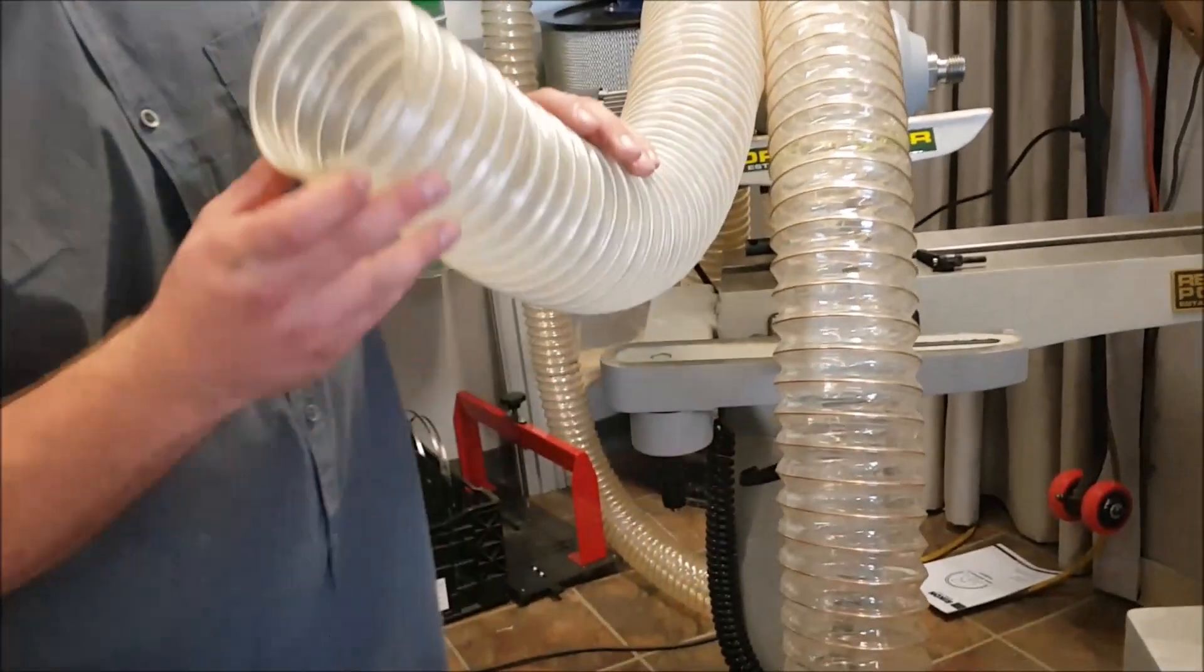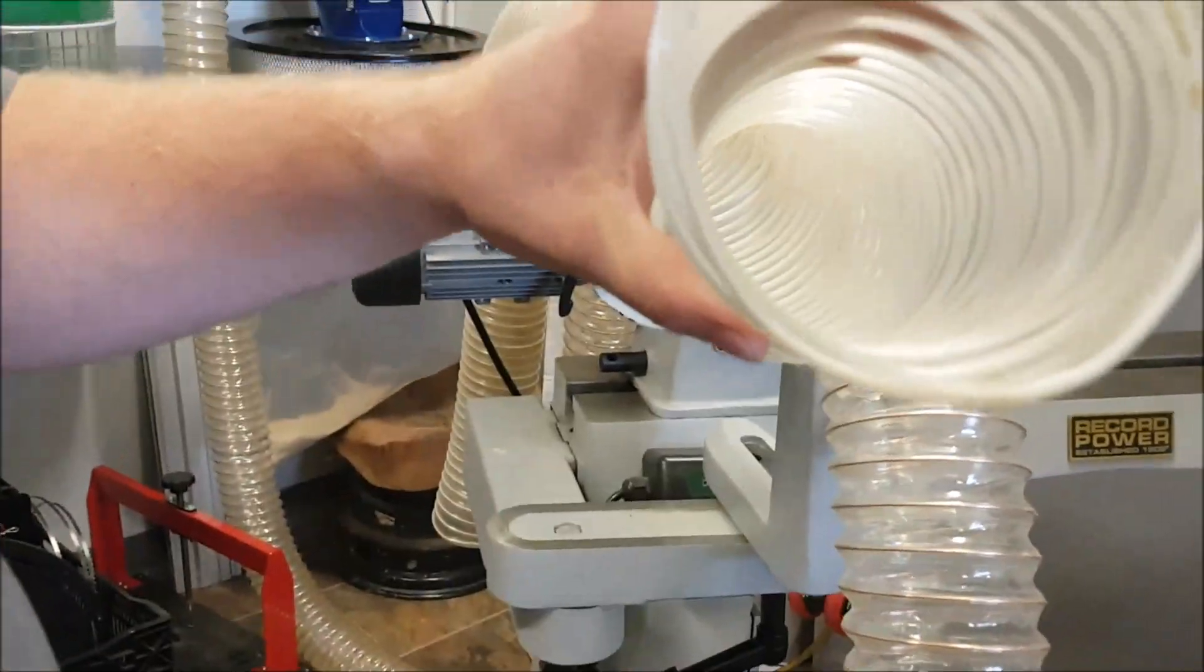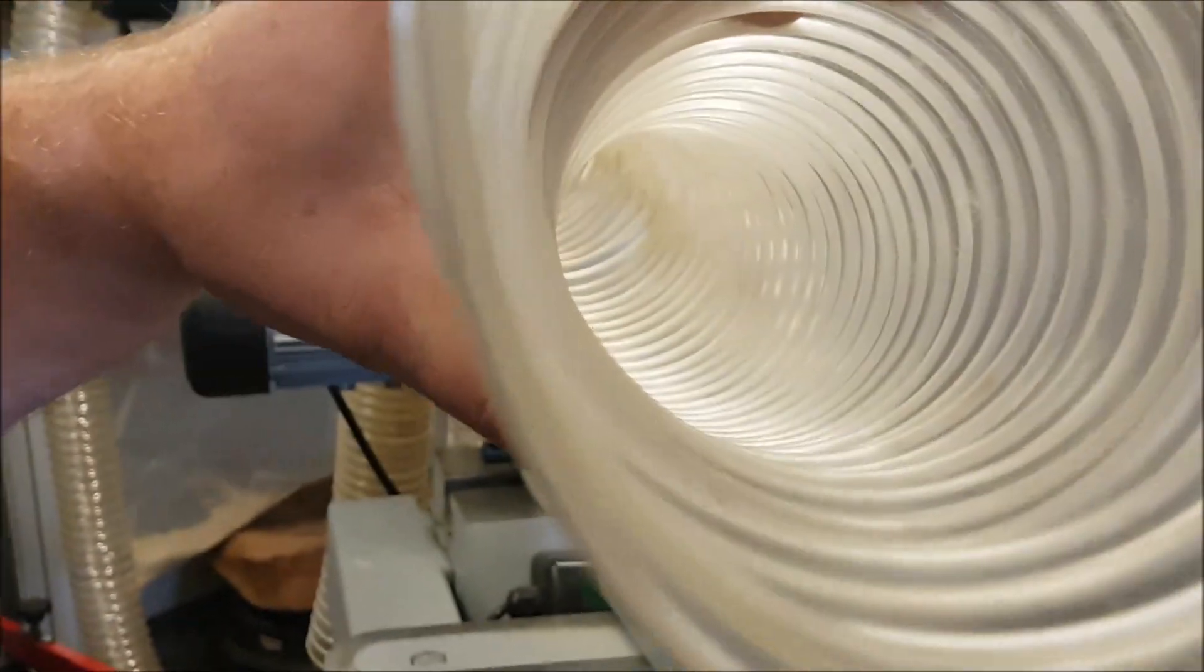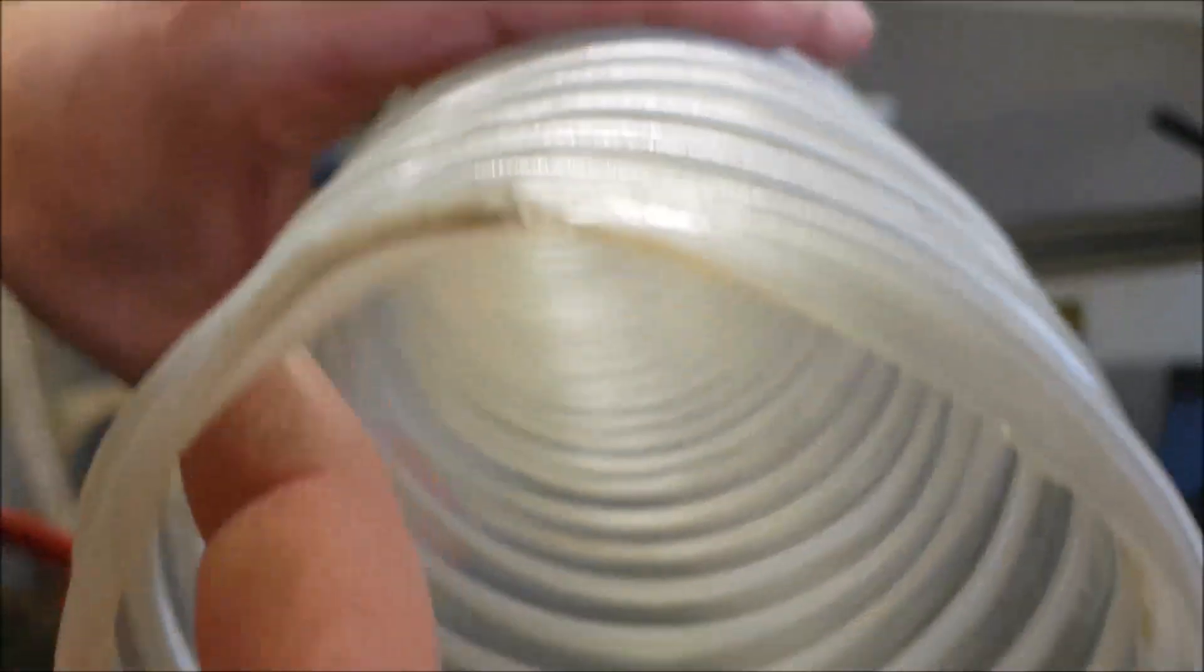What I have found with PVC is if you look on the inside here, and you can even tell from the outside, there's some buildup of sawdust on the inside of this pipe. And you can see that right in there.